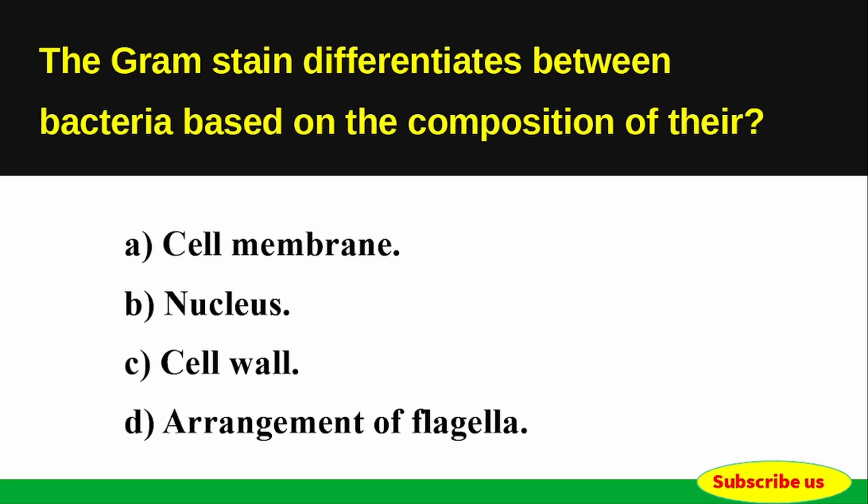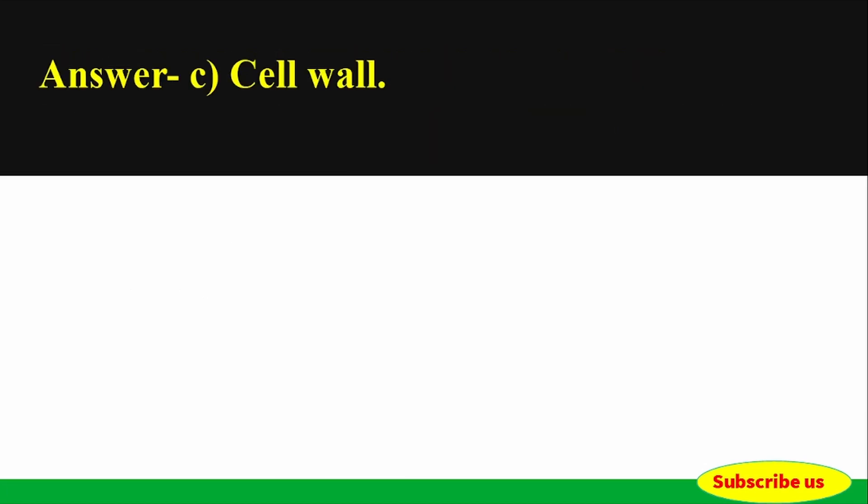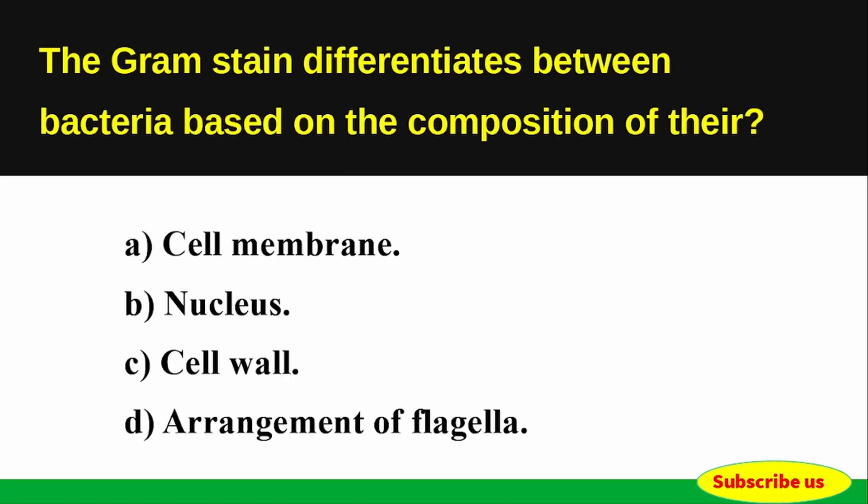Question: The Gram stain differentiates between bacteria based on the composition of their — Options: A) Cell Membrane, B) Nucleus, C) Cell Wall, D) Arrangement of Flagella. Correct answer: Option C — Cell Wall. The Gram stain differentiates between bacteria based on the composition of their cell wall.